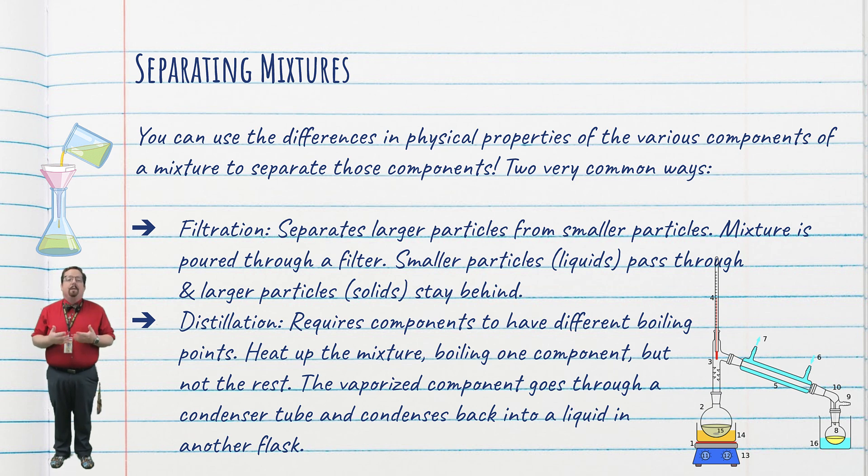Distillation is also a great way to separate components of mixtures. This time, instead of using the different sizes of particles of each component, we utilize the differences in boiling temperatures. If you have two liquids mixed together, one with a much lower boiling point than the other, we can heat the mixture up just enough to boil the one component without boiling the other. The one component boils, turns into a vapor, passes through what we call a condenser tube, and then condenses back into a liquid in another flask. I do this often to make distilled water for our class. By boiling the water, the minerals and other junk that exists in our tap water get left behind, and the water vaporizes and transfers to another container and turns back into a liquid.